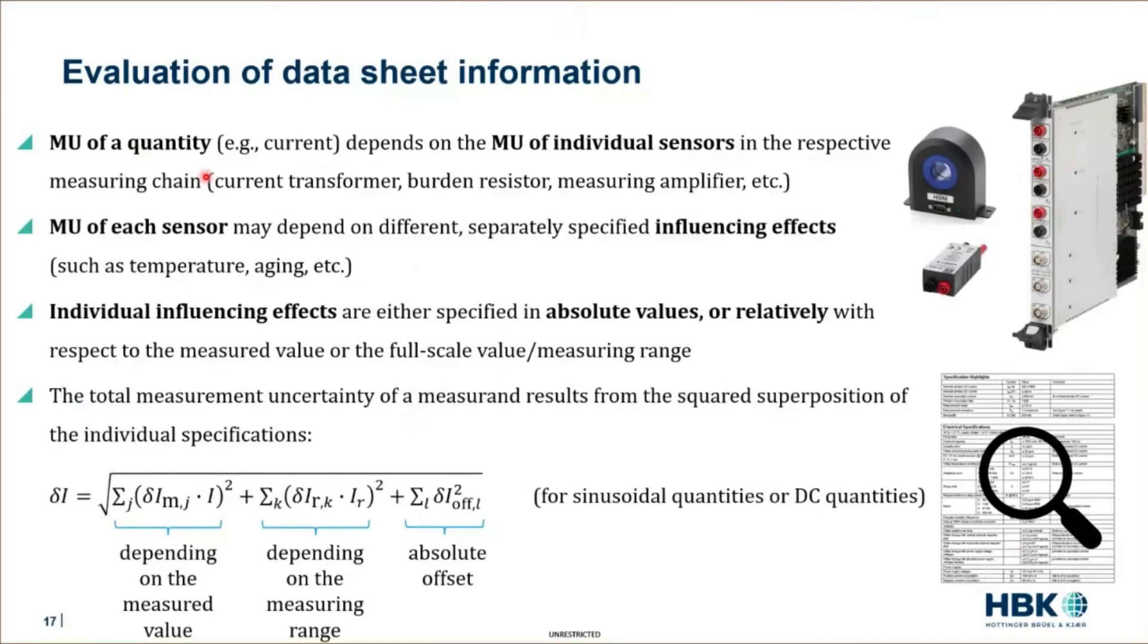In order to measure the current, we have a lot of different sensors in the measuring chain. For example, the current transducer, the burden resistor and the input amplifier or the power card in this case. And all of them contain measurement uncertainty, in addition to the environmental conditions. What we should do is we need to calculate the measurement uncertainty of all of those components. And then each component, if you look into the data sheets of those components, each component is specified with different influencing effects. If I say influencing effects, I talk about things like temperature, temperature depending errors, aging dependent errors, nonlinearity error or magnetic field influence and all those things.